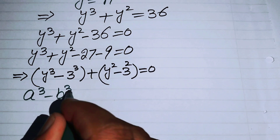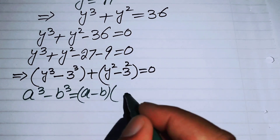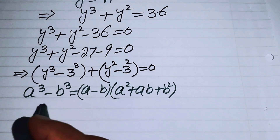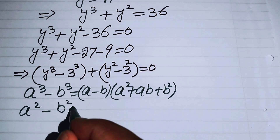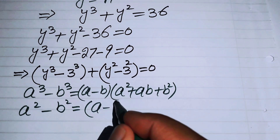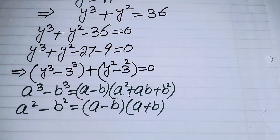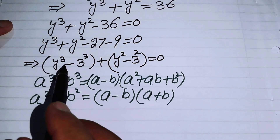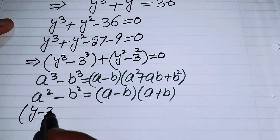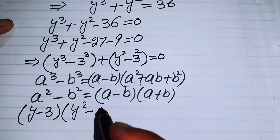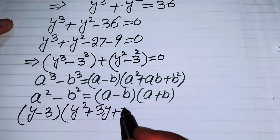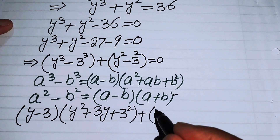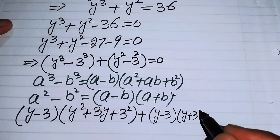We apply two formulas: a³ - b³ = (a - b)(a² + ab + b²) and a² - b² = (a - b)(a + b). Applying the difference of cubes to the first term gives (y - 3)(y² + 3y + 9), and applying the difference of squares to the second term gives (y - 3)(y + 3), so the equation becomes (y - 3)(y² + 3y + 9) + (y - 3)(y + 3) = 0.